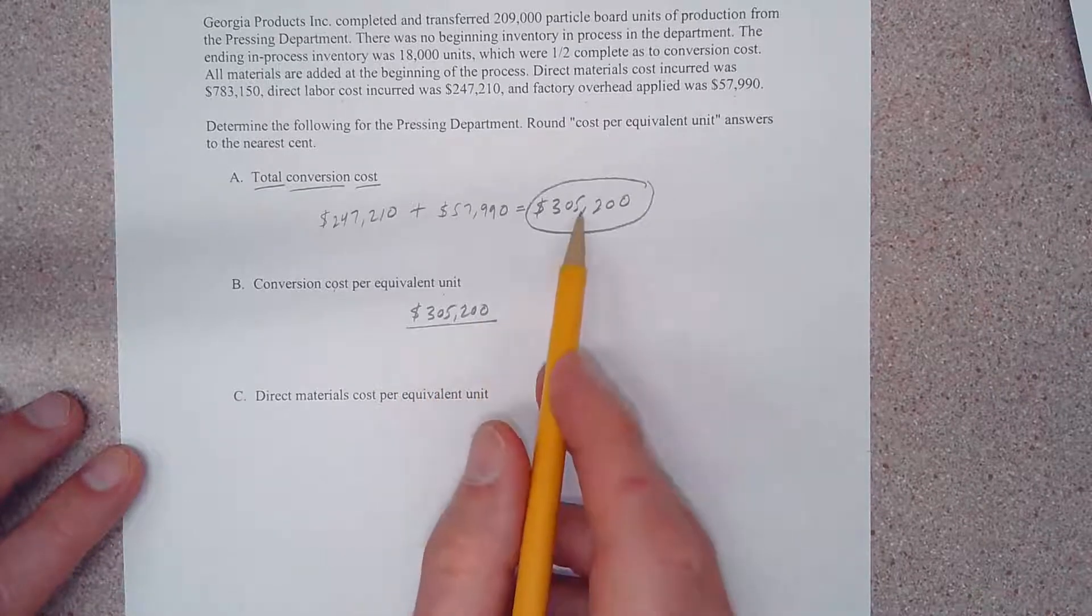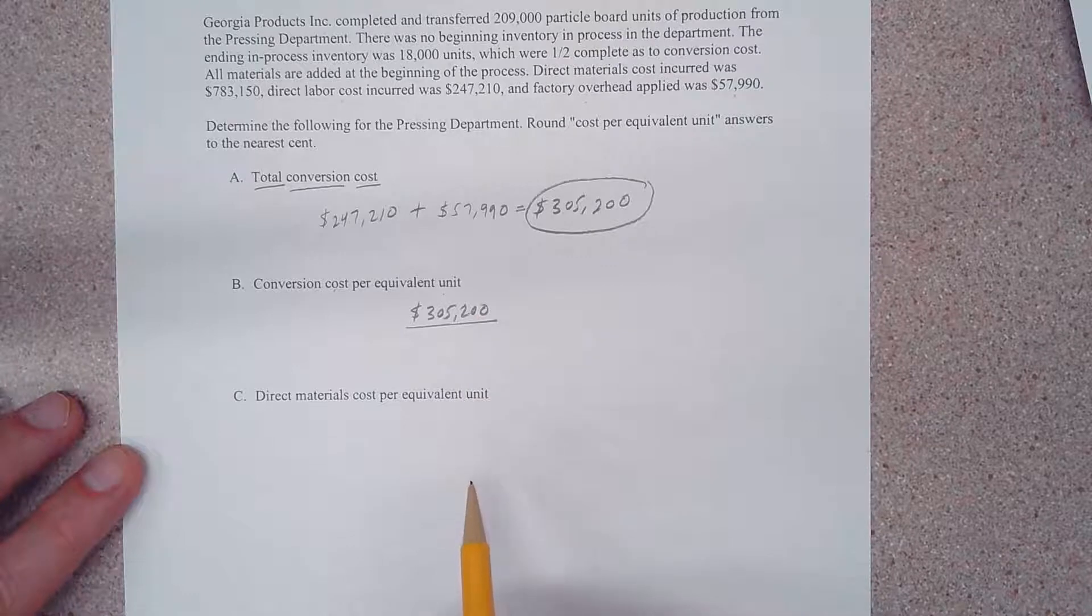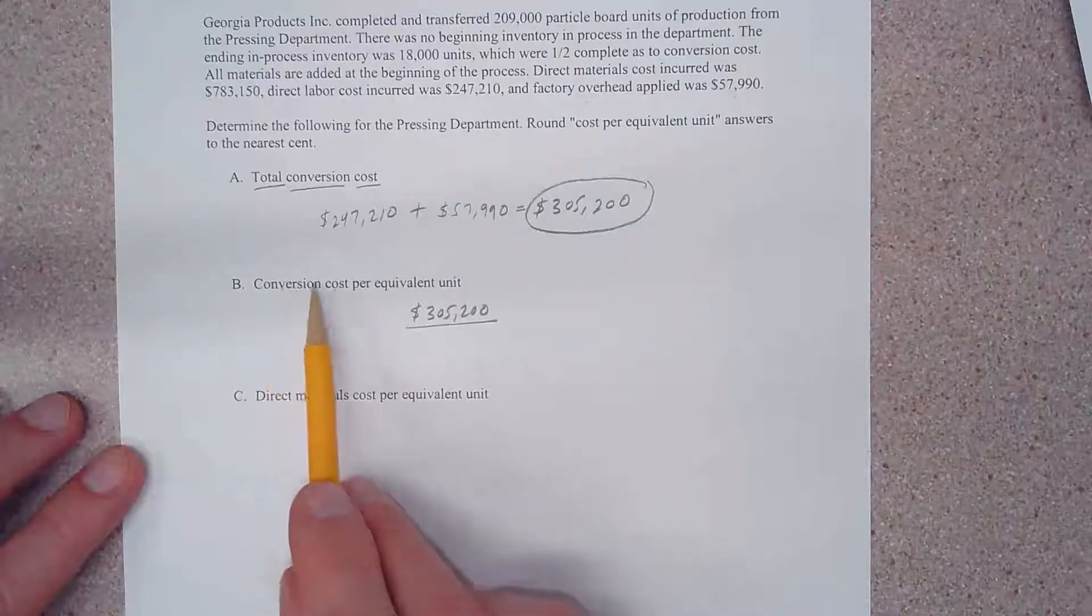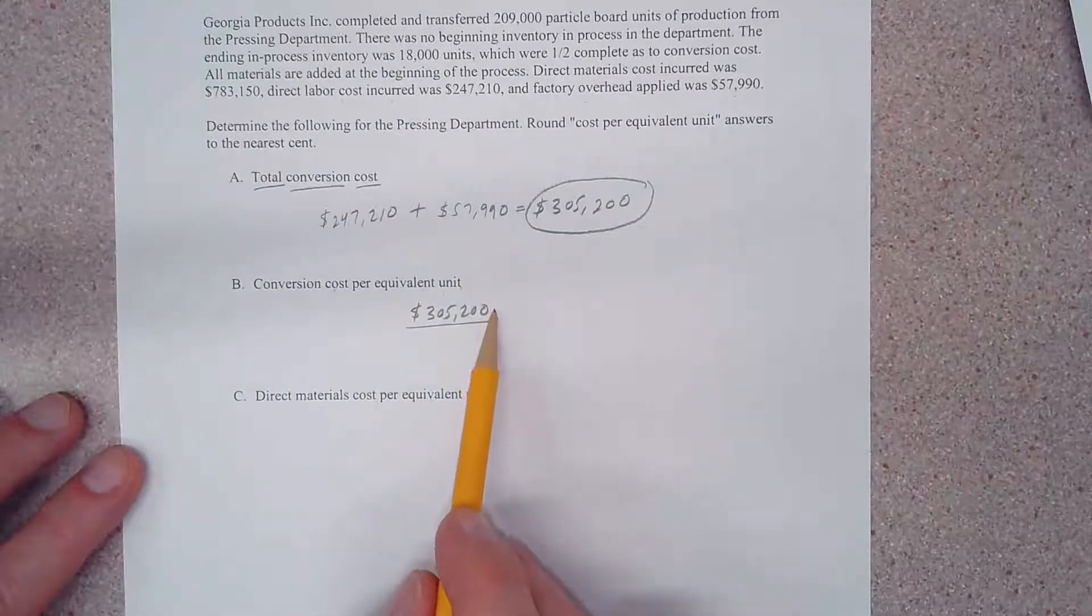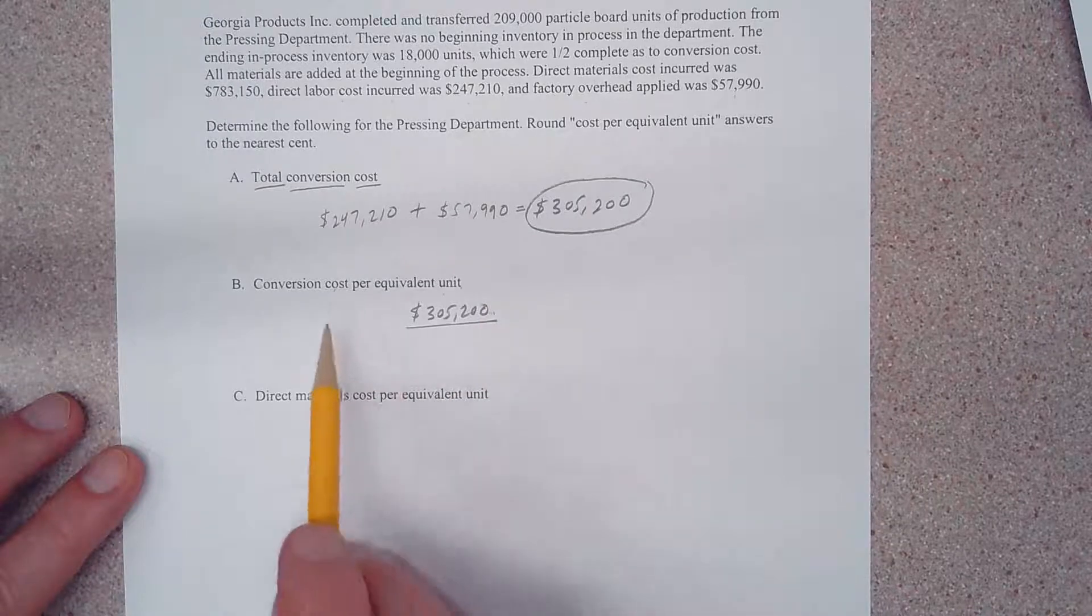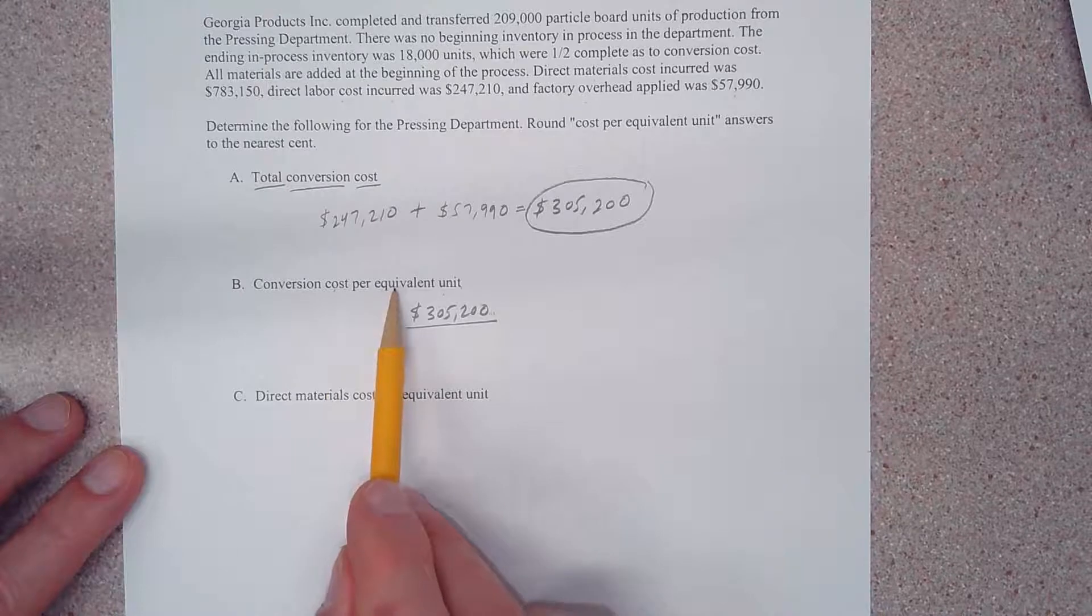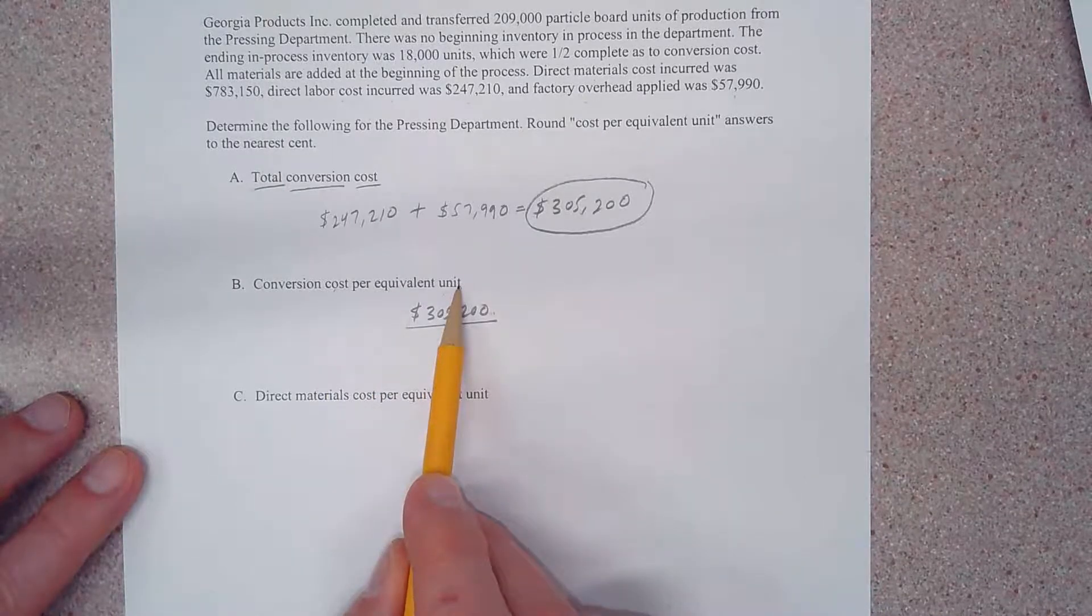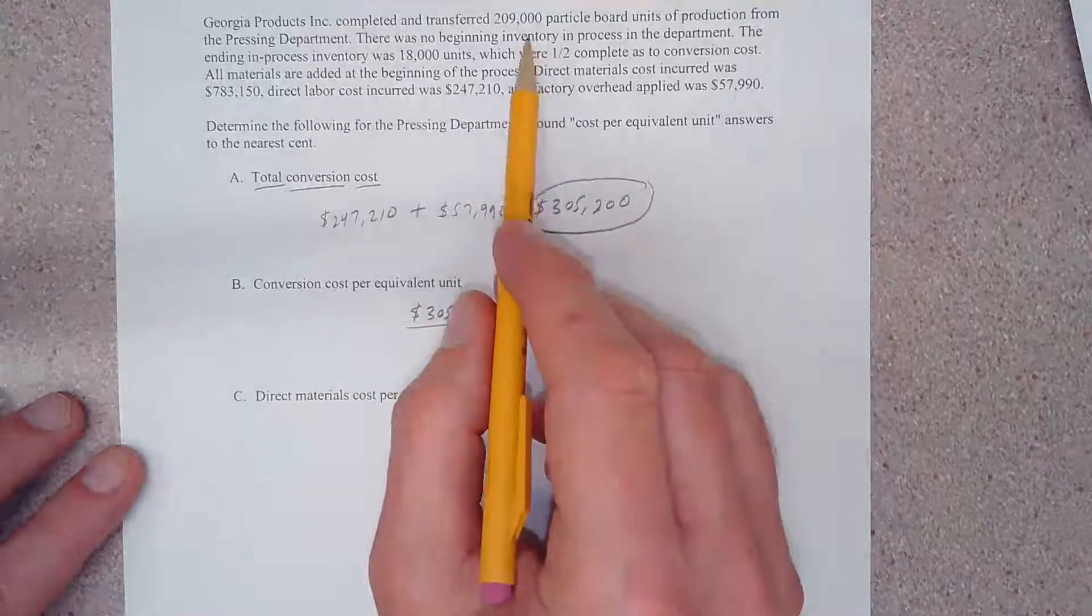Specifically our $305,200 right here is going to be our numerator. Well, in order to come up with our conversion cost per equivalent unit, we have to know both the total dollar figure for conversion cost. We also need to know how many equivalent units we have for conversion cost. Okay, so if we go up here it says...